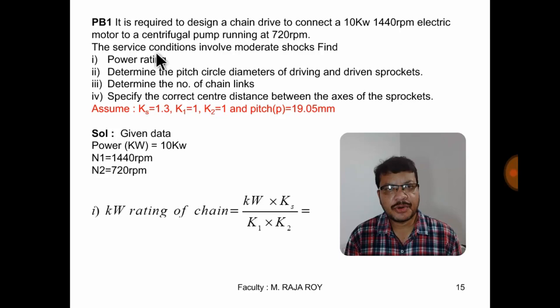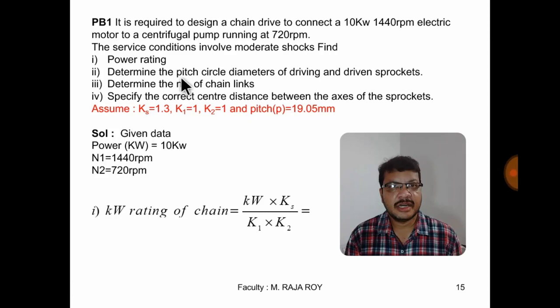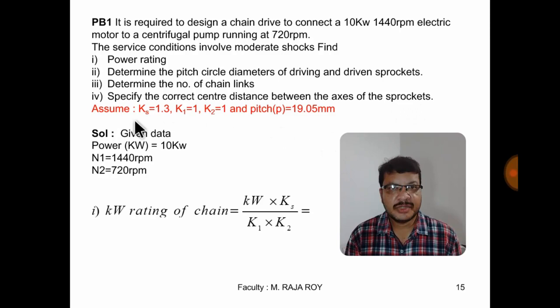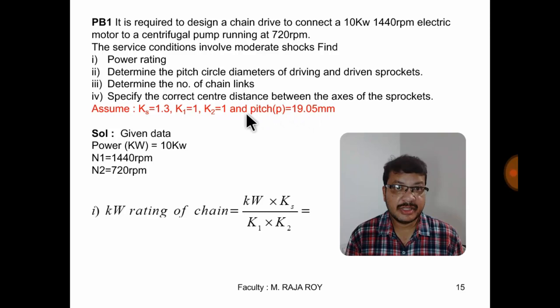Now we will see a simple problem on chain drives. It is required to design a chain drive to connect a 10 kW, 1440 rpm electric motor to a centrifugal pump running at 720 rpm. The service conditions involve moderate shocks. Find the power rating, determine the pitch circle diameter of the driving and driven sprockets, determine the number of links in the chain, and specify the correct center to center distance. Assume Ks = 1.3, K1 = 1, K2 = 1, and pitch = 19.05 mm. These values are normally taken from the data book.